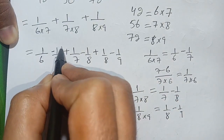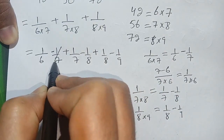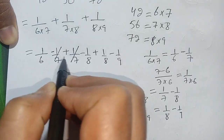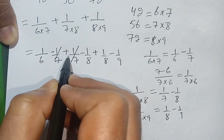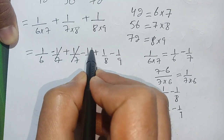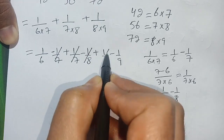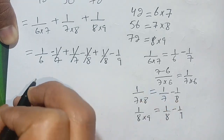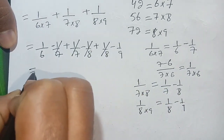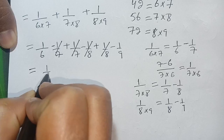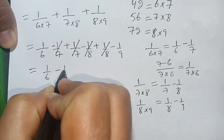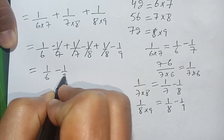We can cancel out the 1 divided by 7 with the other 1 divided by 7, as they have opposite signs. Same case with 1 divided by 8 and 1 divided by 8. Our remaining terms are 1 divided by 6 minus 1 divided by 9.